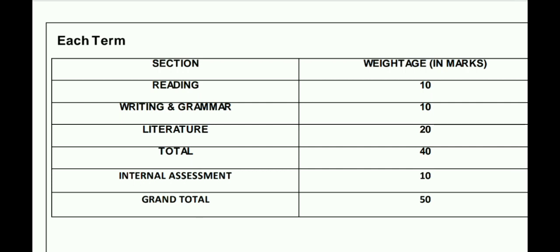Overall kitna marks ho gaya? 50 plus 50 is equal to 100. So 100 ka hi aapka paper hota hai. I hope aapko yeh bilkul samajh mein aa gaya hoga — jo CBSE ne aaj hi Term 1 aur Term 2 wise aapka syllabus declare kiya hai. So agar aapko koi bhi doubt ho — subjects related course ya jo bhi deleted chapters wagerah rahega — toh aap mujhe right in box mein likh sakte hain. Definitely I will give you the answer of that, and I hope your doubt is clear now.